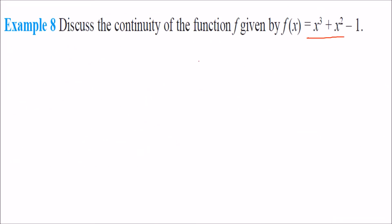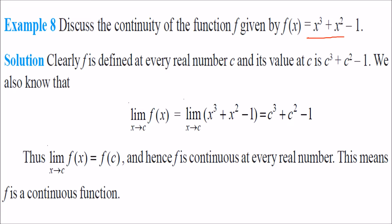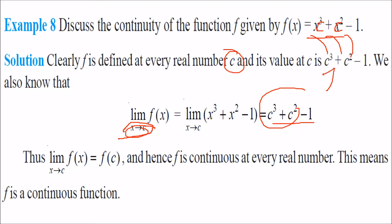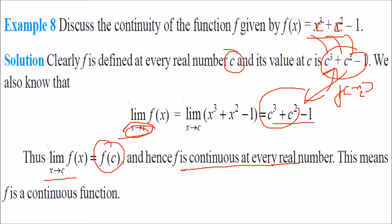Discuss the continuity of f(x) = x³ + x² − 1. This is a polynomial function, so f is defined for every real number. For any fixed c, f(c) = c³ + c² − 1, and the limit as x→c is also c³ + c² − 1. These two are exactly equal, so f is continuous at every real number. In fact, every polynomial is a continuous function.